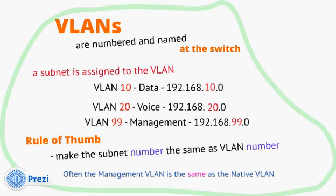VLANs are numbered and named at the switch, and a subnet is assigned to each VLAN. For example, VLAN 10 could be for data with the subnet address 192.168.10.0. VLAN 20 — the 10 and 20 are the VLAN IDs — can be called 'voice' with a subnet address of 192.168.20.0. VLAN 99 is the management VLAN with address 192.168.99.0. You're allowed pretty much any ID number from 1 up to around 999.